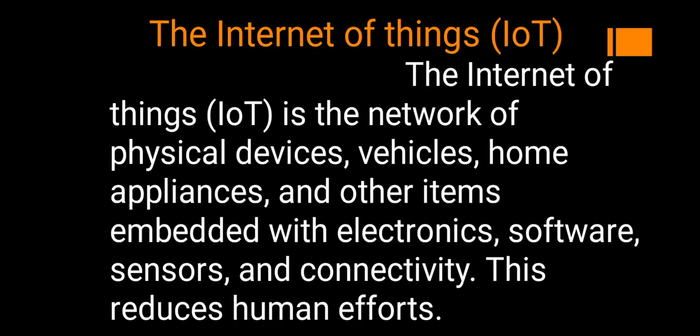IoT stands for Internet of Things. It is the network of physical devices, vehicles, home appliances, and other items embedded with electronic software, sensors, and connectivity. These physical devices — vehicles like cars, scooters, two-wheelers, four-wheelers — and home appliances are embedded with electronics and software, creating connectivity and reducing human efforts.